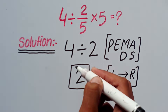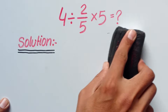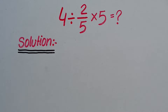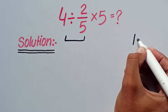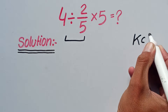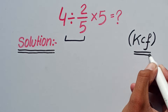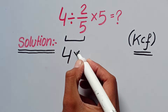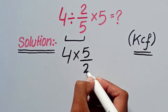Now I will remove the wrong method and solve the question by the correct method. In this question there is one multiplication and one division. To solve this, we must follow the rule of KCF, which stands for Keep, Change, Flip. According to the KCF rule, whenever we change division to multiplication, the numerator is changed to denominator and denominator is changed to numerator.